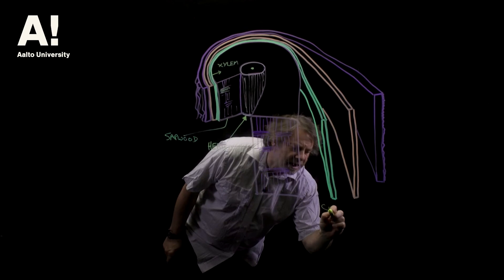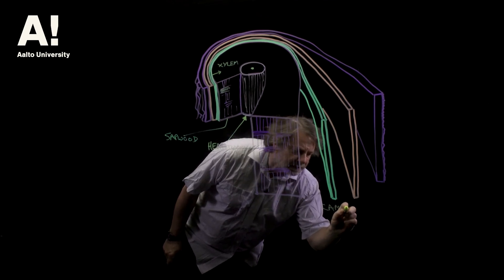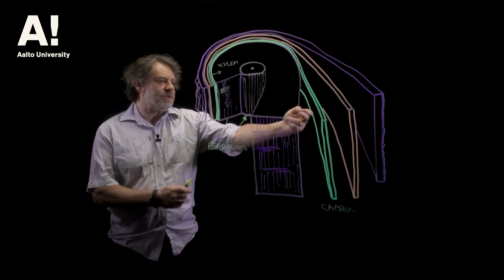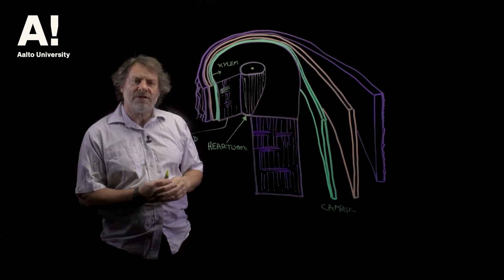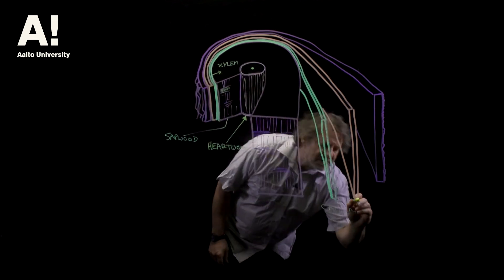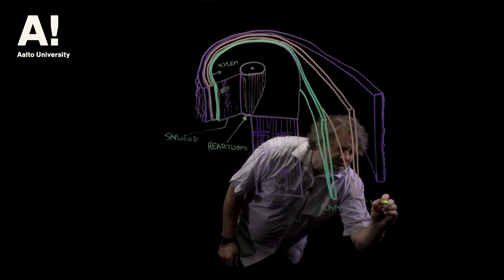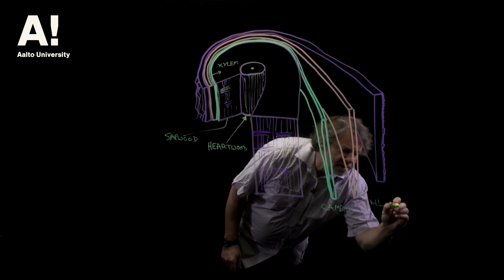This is the cambium. And then, we get cell division running inwards and we get cell division going outwards. And the cell division going outwards forms phloem tissue.